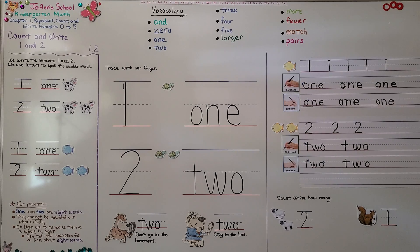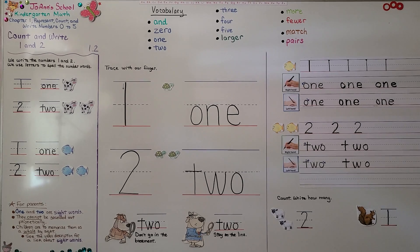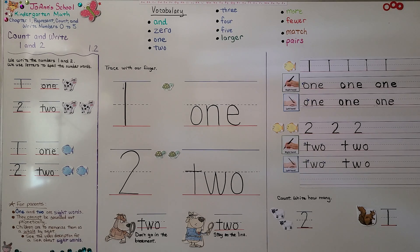You can count one or two objects and write the numbers one and two. I hope you have a wonderful day and join me next time for Lesson 1.3, when we model and count three and four. Bye-bye!